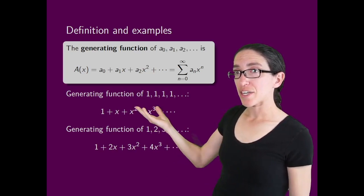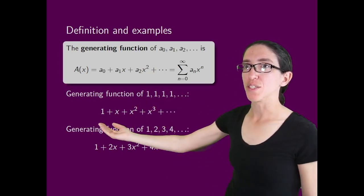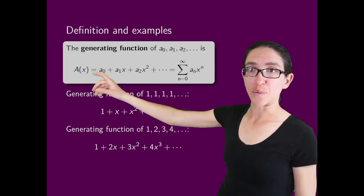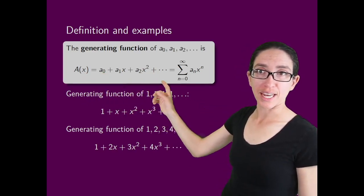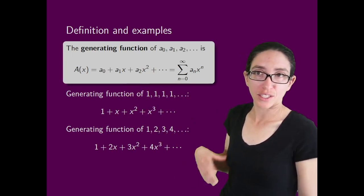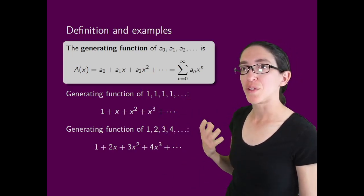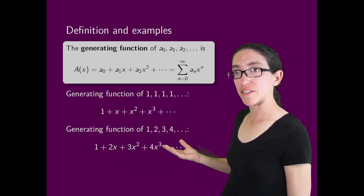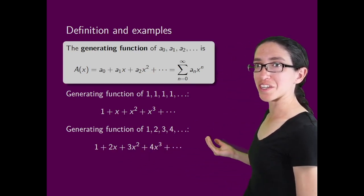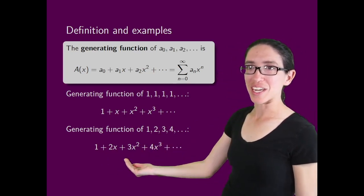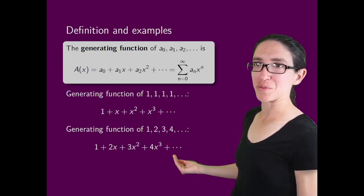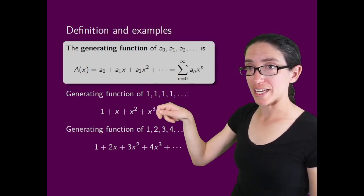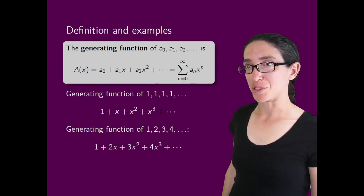For instance, the generating function of the all-ones sequence is 1 plus x plus x squared plus x cubed, etc. We can use a different variable too, by the way — we can do A of y and then replace the x's with y. We can use any symbol for x; it could be a star, it could be a smiley face, whatever you like. It's just a formal symbol. The generating function of the counting numbers 1, 2, 3, 4, ... is 1 plus 2x plus 3x squared plus 4x cubed, etc. We're just using the powers of x as the clothesline hangers to hang up your sequence of numbers for display.